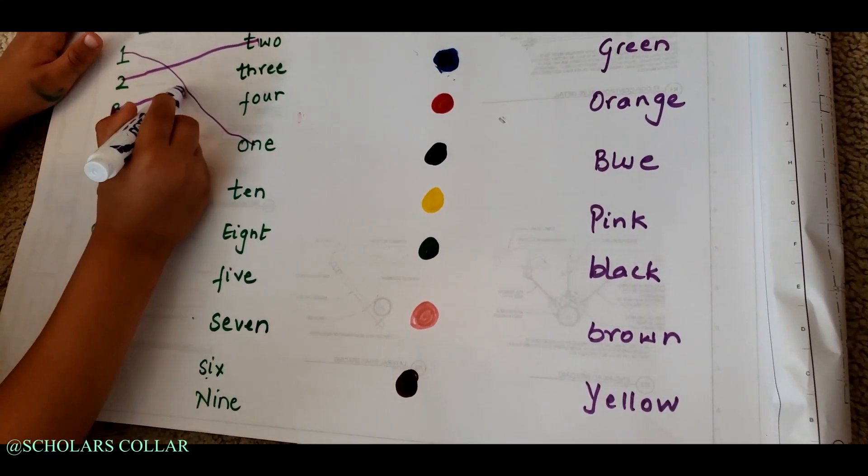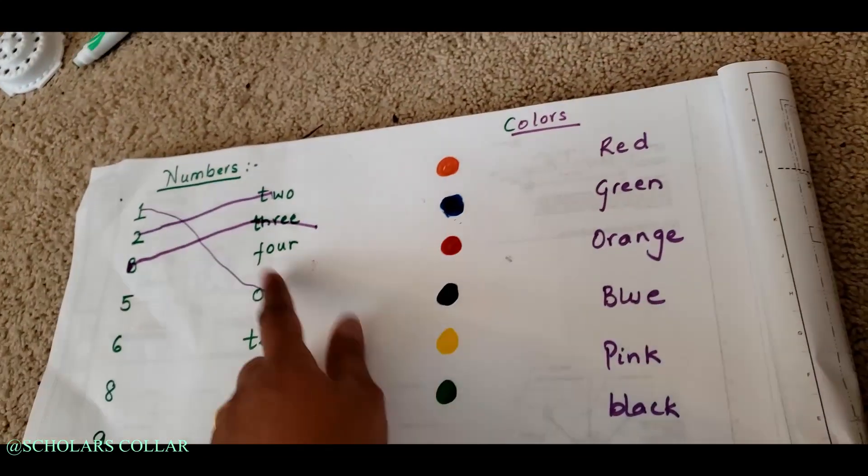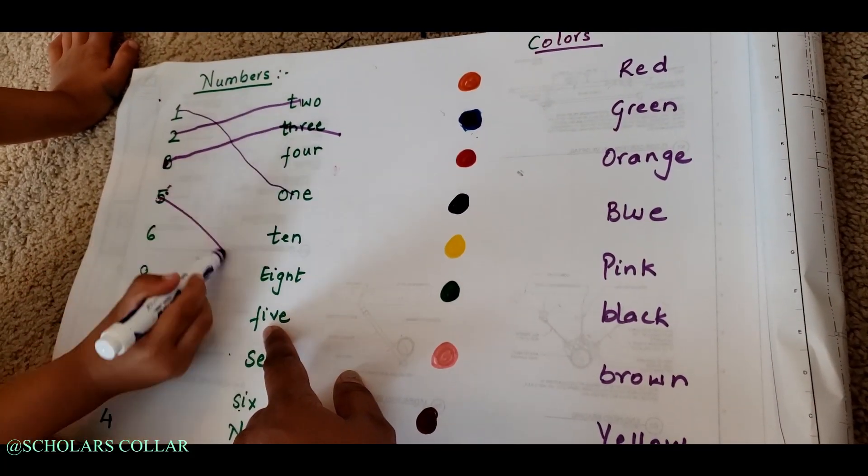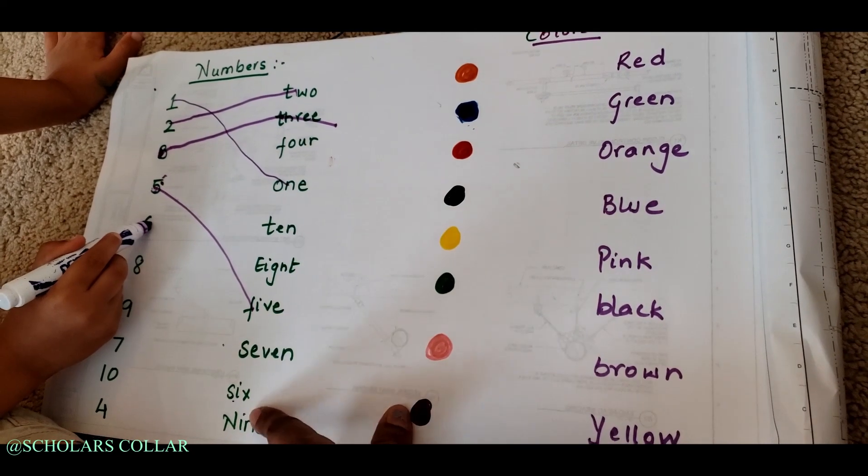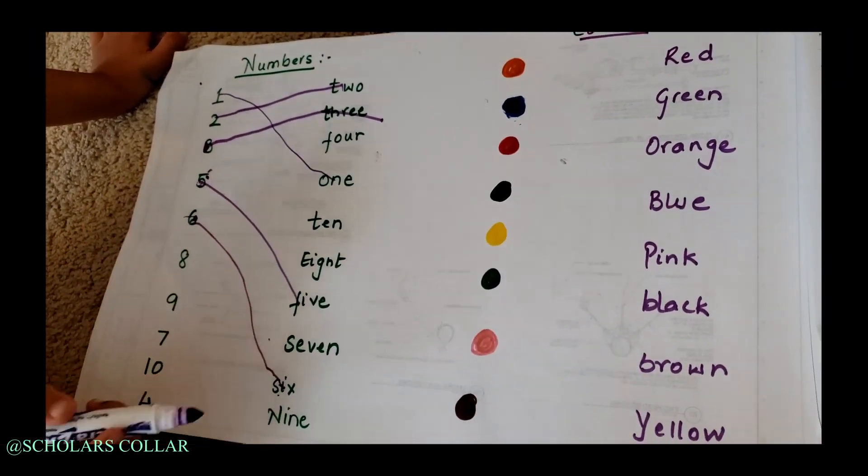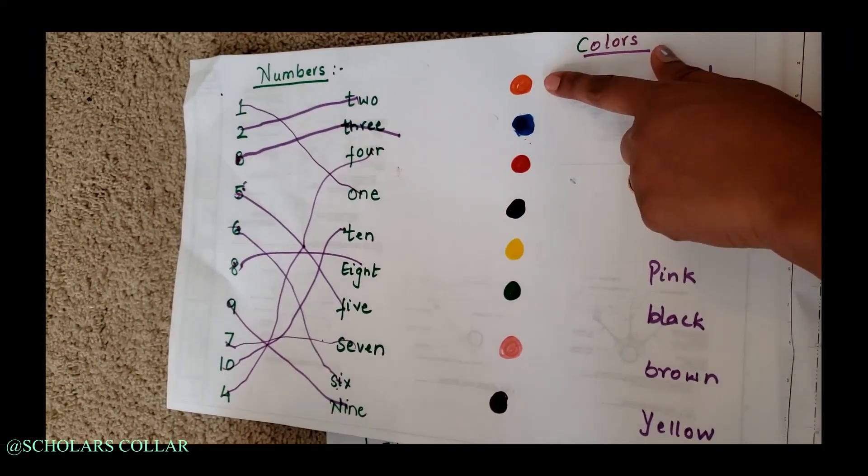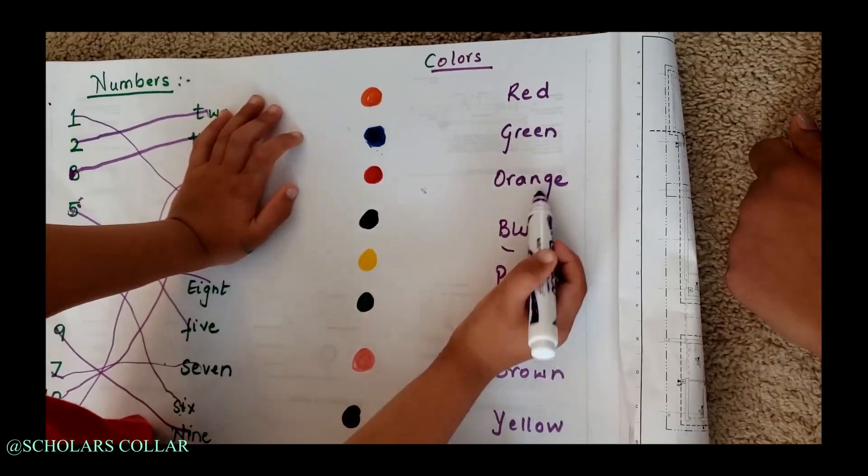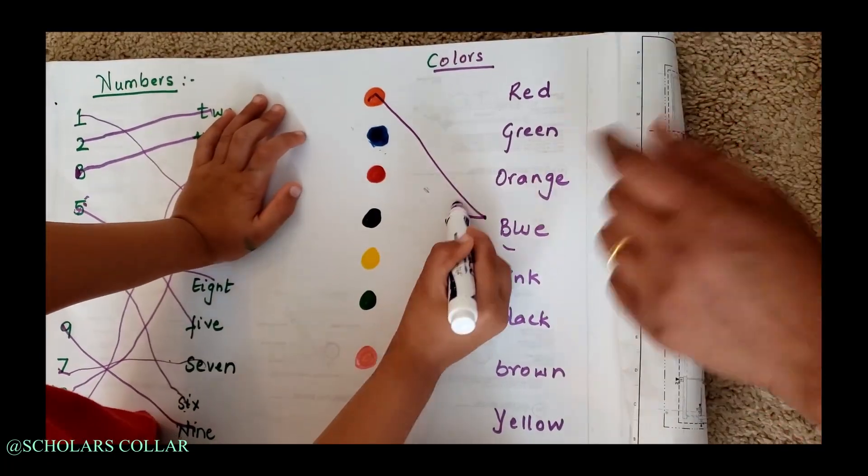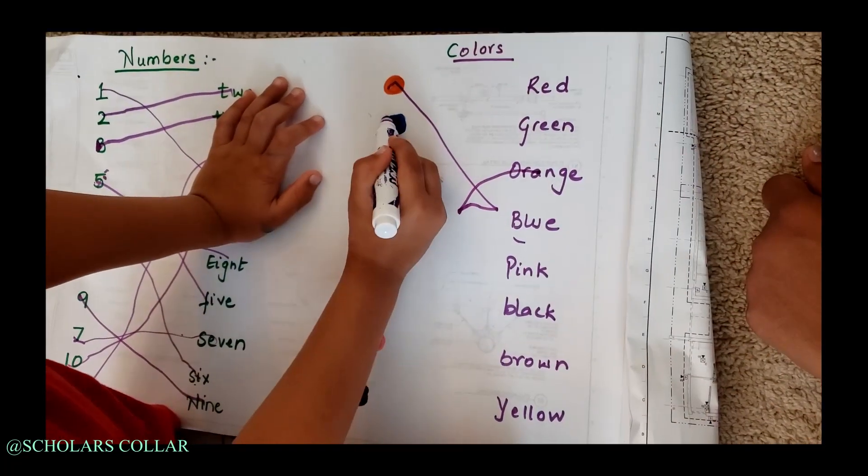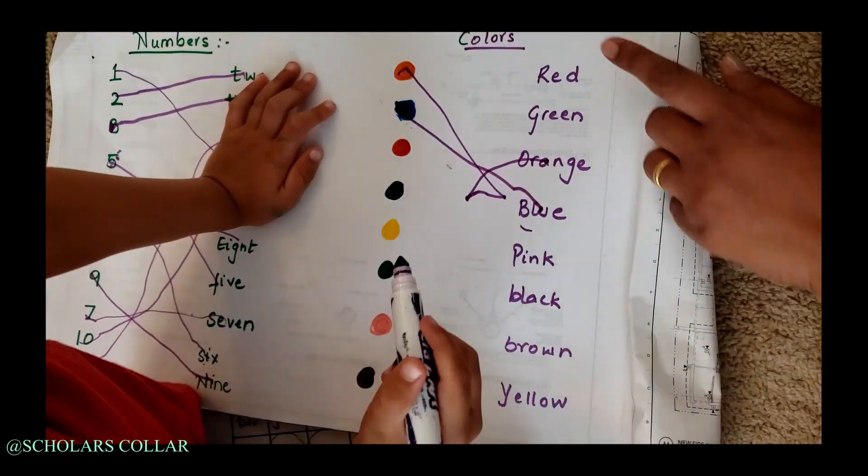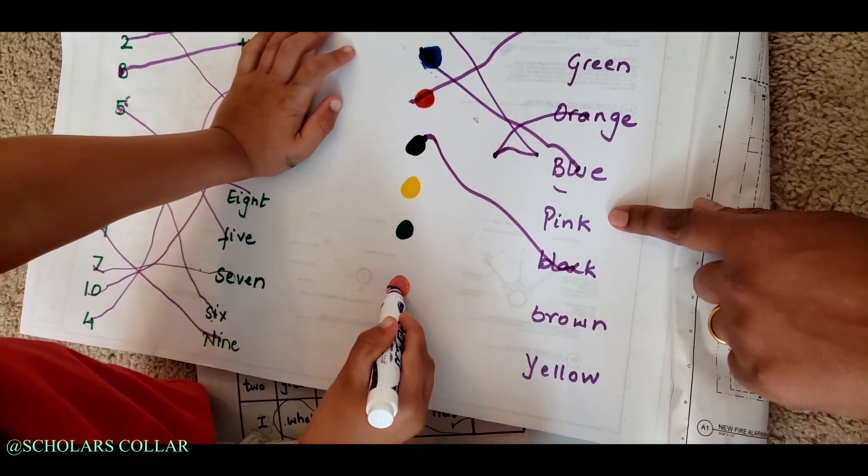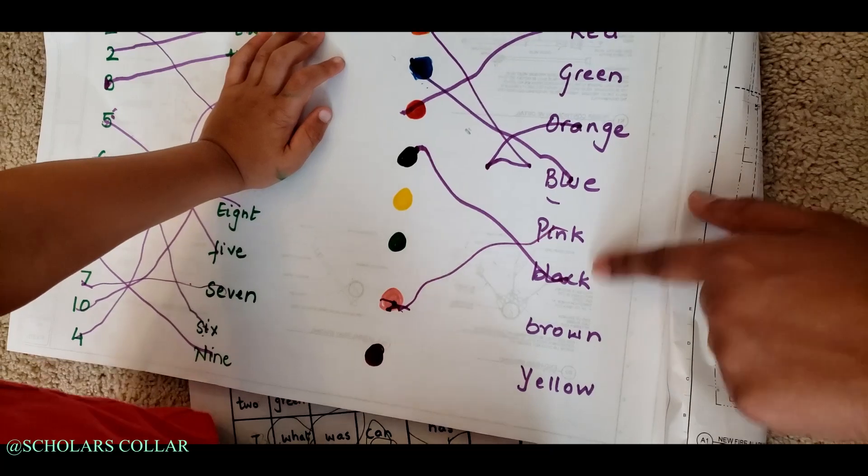It might seem easy for us, but for your child it's really difficult because this is the first time they're hearing the word 'five' as F-I-V-E and 'blue' as B-L-U-E, as opposed to just the color blue or just the number five. Practice this every day because it's going to make a huge difference in their vocabulary, especially when they see the word 'blue' and associate the color with the actual word.